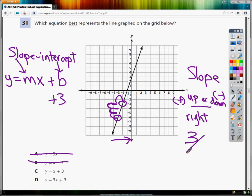Kind of makes it look like a thumbs up sign. 3 over 1. 3 over 1 reduces to just 3. So my slope is 3x. So my answer is y equals 3x plus 3, which is D.